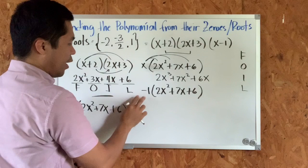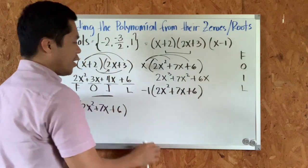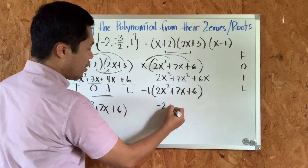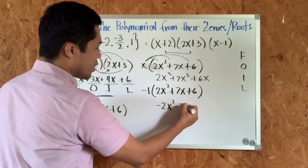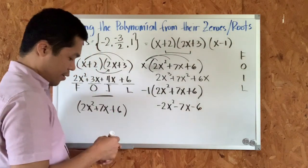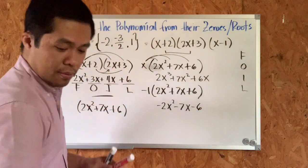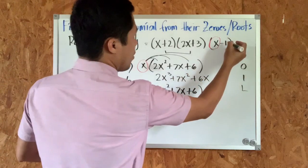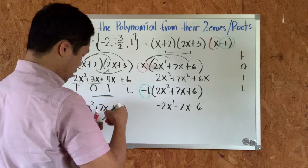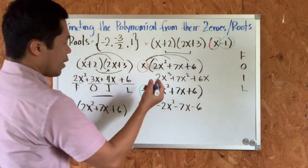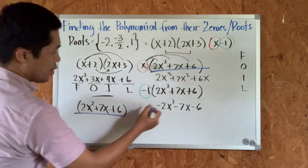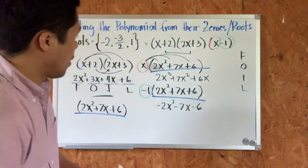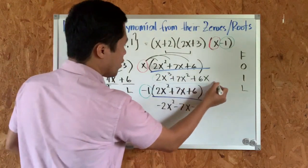Now distributing negative one to the polynomial 2x squared plus 7x plus six. Since we're multiplying by negative one, we just change all the signs: this becomes negative 2x squared, minus 7x, minus six.